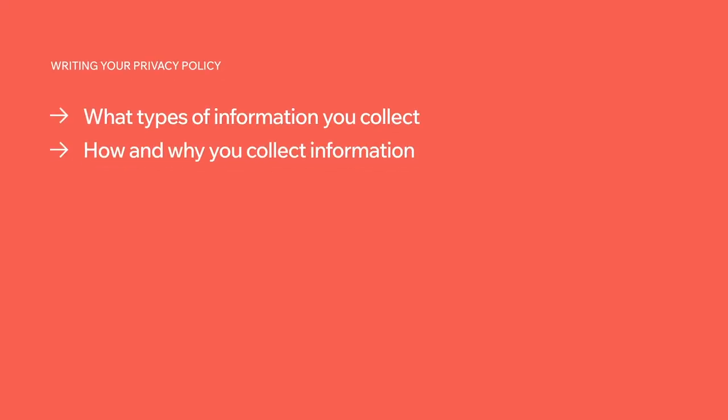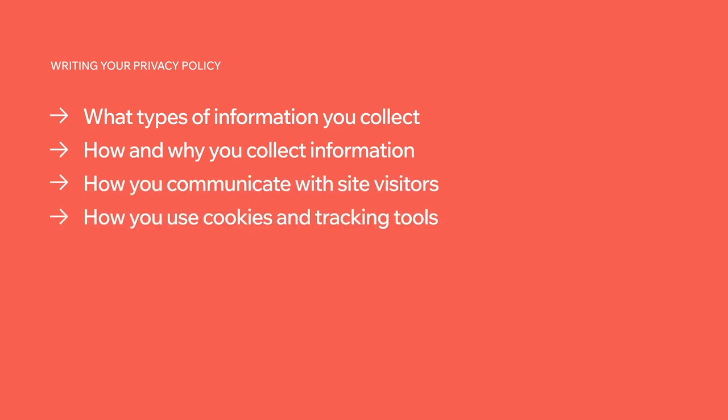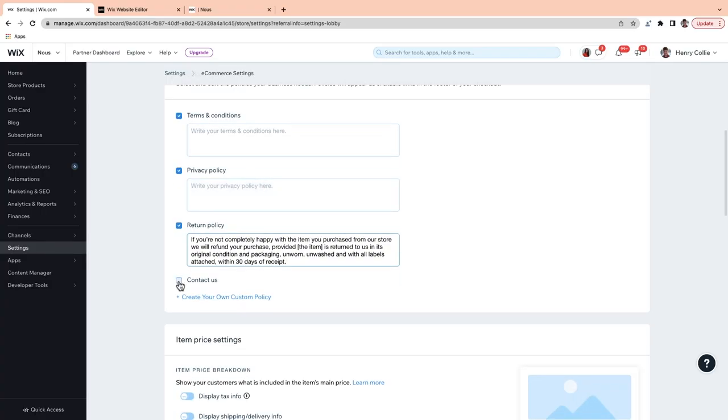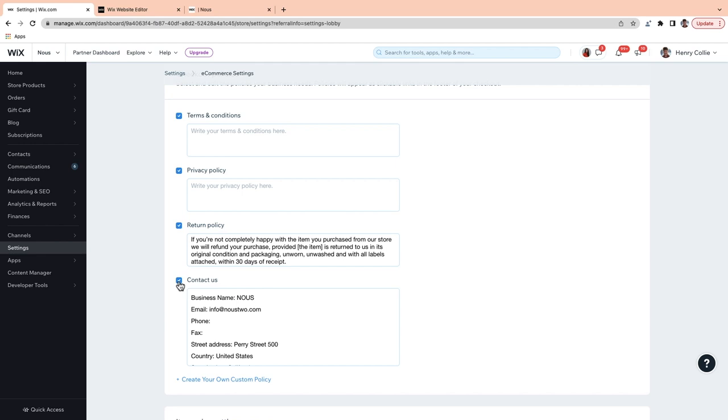Next up, let's talk about the privacy policy. It's an important piece of communication and trust for your customers, but it's also a key part of making your site legally compliant. We'll go over some standard best practices here, but you may want to talk to a professional to ensure that your site complies with the privacy laws in the regions you operate, including GDPR in Europe and CCPA in California. In your privacy policy, you want to outline the types of information you collect, how and why you collect and manage your site visitors' information, how you communicate with your site visitors, how you use cookies and other tracking tools, how your site visitors can withdraw their consent, and your contact information. Including contact information on your site is one of the biggest steps in making your site legally compliant in many regions.